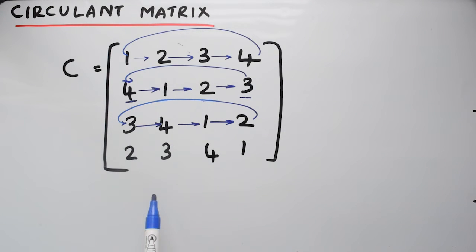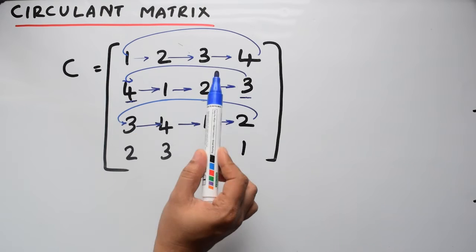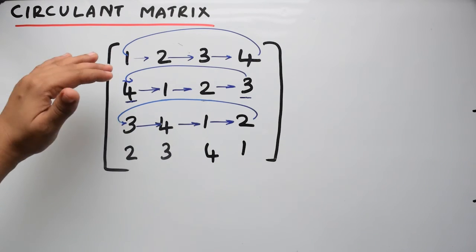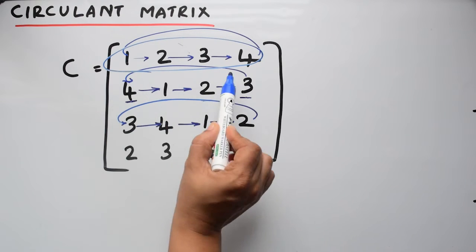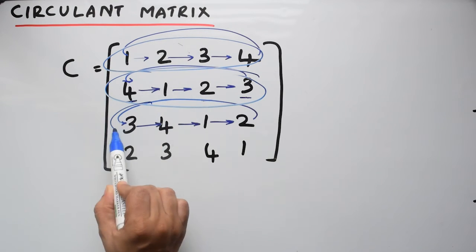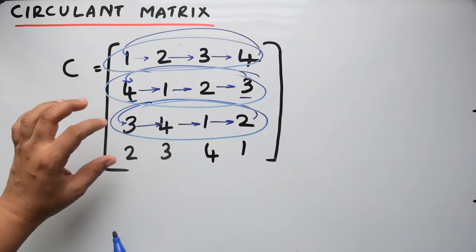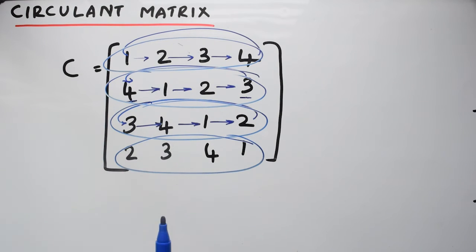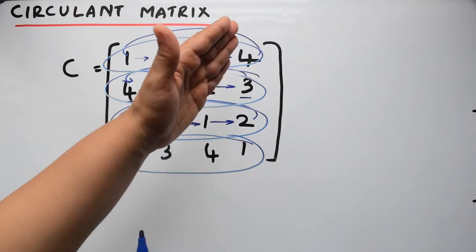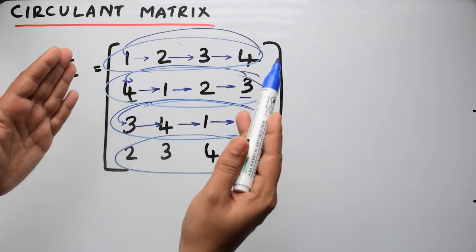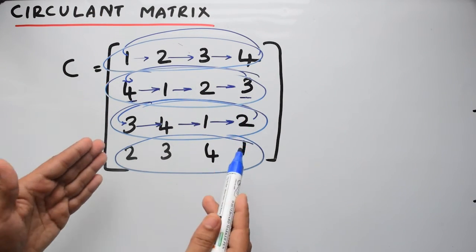So a circulant matrix is a square matrix in which all row vectors are composed of the same set of elements. All these four row vectors - each of these are row vectors - have the same set of elements. That is, this row has 1, 2, 3, 4. The same set of elements appear in the second row, third row, and fourth row.